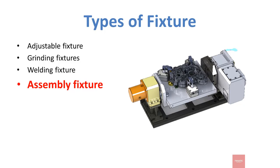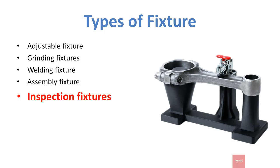Assembly fixtures are used in the assembly line, where we can place one part while installing or removing any other parts from that workpiece. Inspection fixtures are used to hold the workpiece while inspecting or performing any tests.